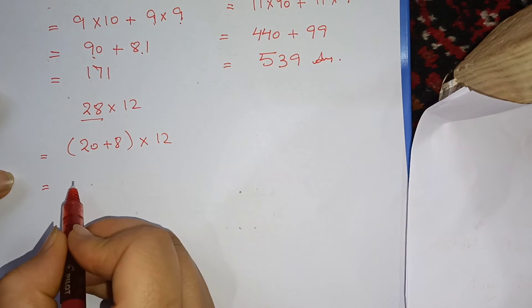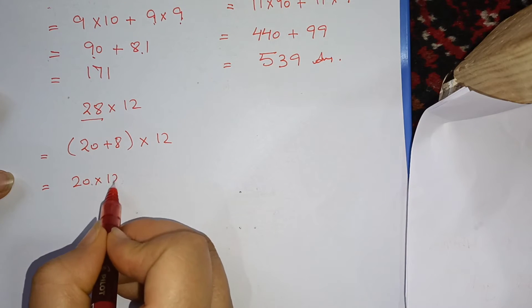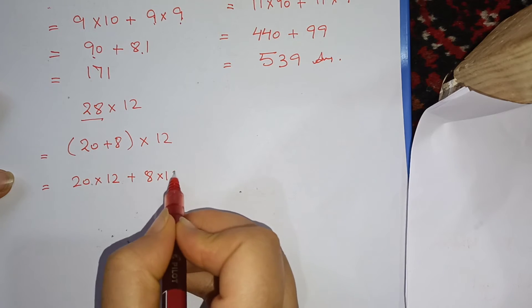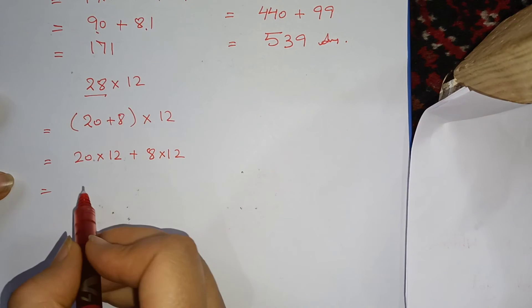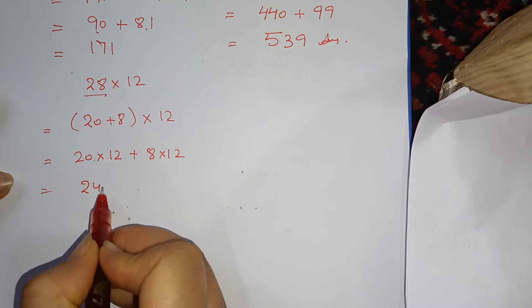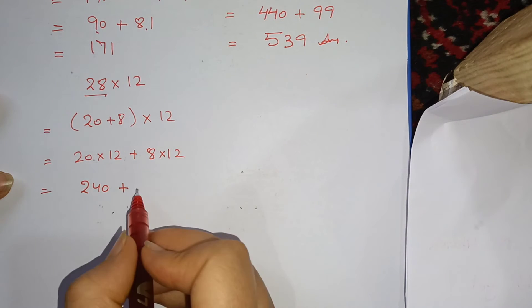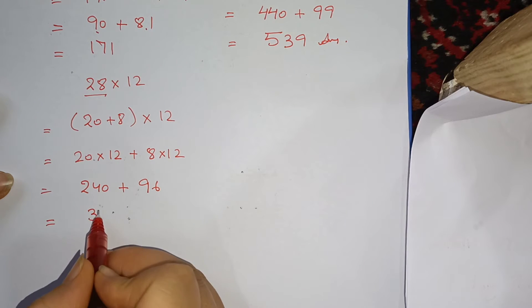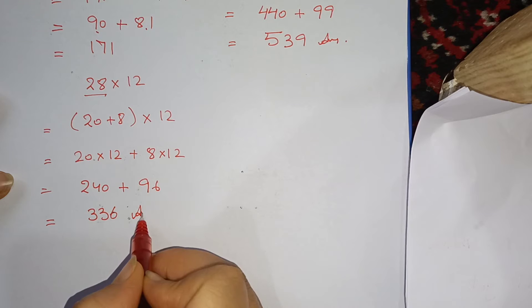We will do 20 into 12 plus 8 into 12. 20 into 12 is 240 plus 8 into 12 is 96. If we add these two, 336 is your answer.